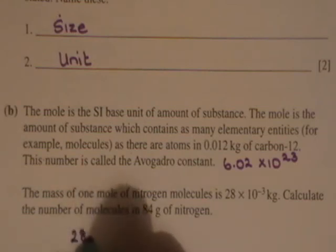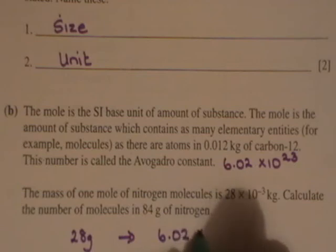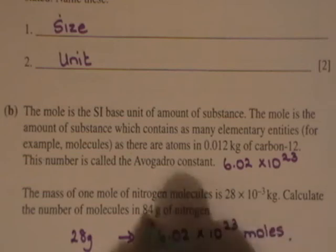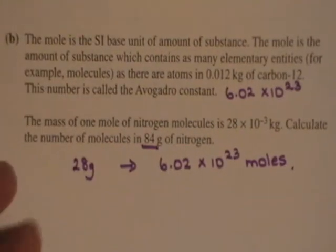...write down: 28 grams has got 6.02 by 10 to the 23 molecules, and the question is asking you how much will you find in 84 grams. And of course, 84 is 3 times 28. If you divide 84 by 28, you get 3.